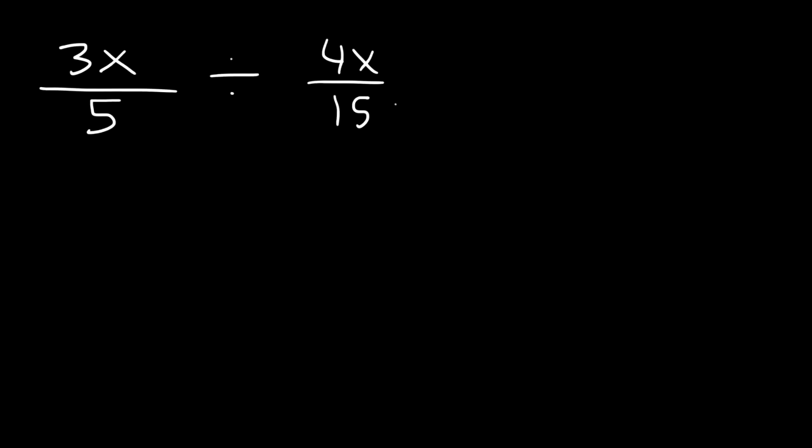So what you want to do first is you want to change division to multiplication using an expression known as keep change flip. Perhaps you heard of that in school. So what you want to do is keep the first fraction the same, change division to multiplication, and then flip the second fraction and then simplify.